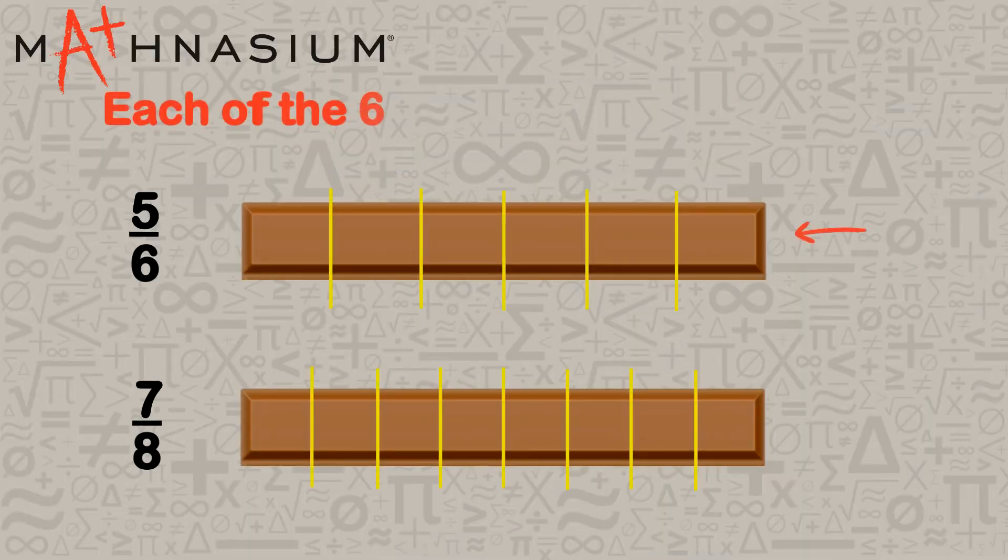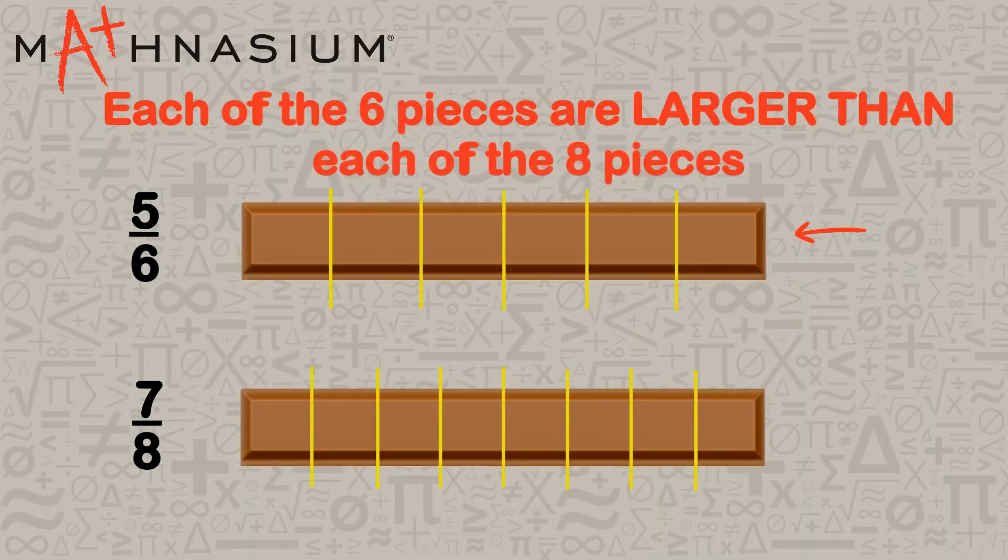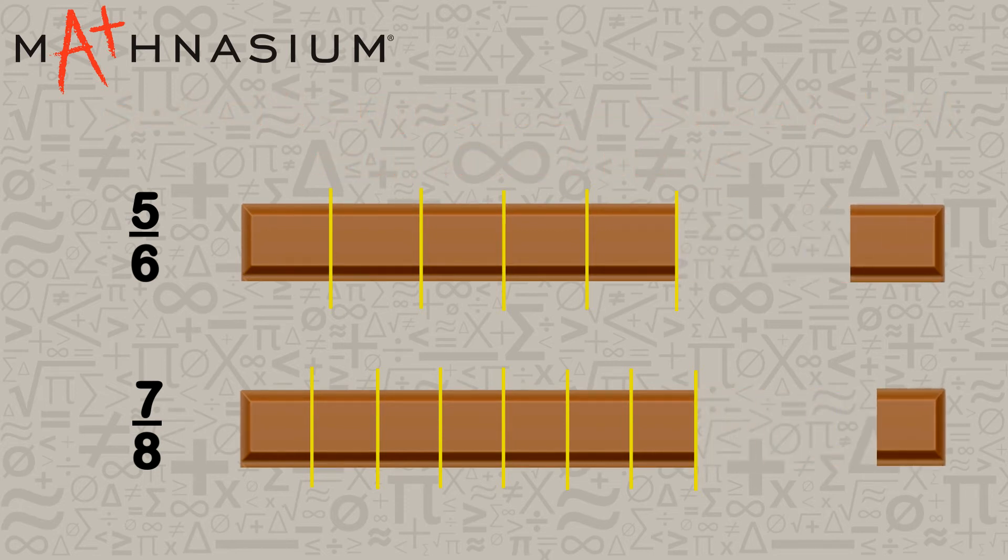Each of the 6 pieces are larger than each of the 8 pieces, so if I were to take one piece away from each candy bar, more from the first candy bar would be taken away.